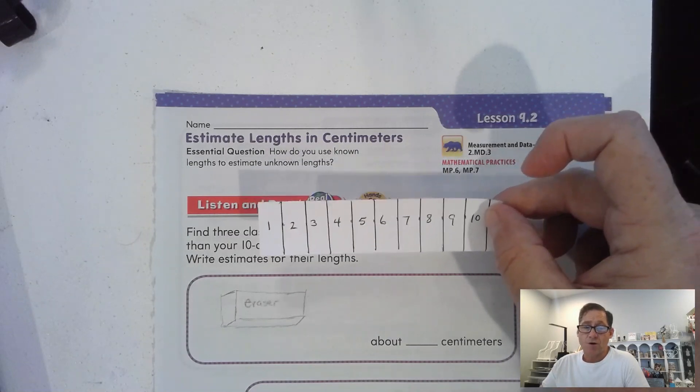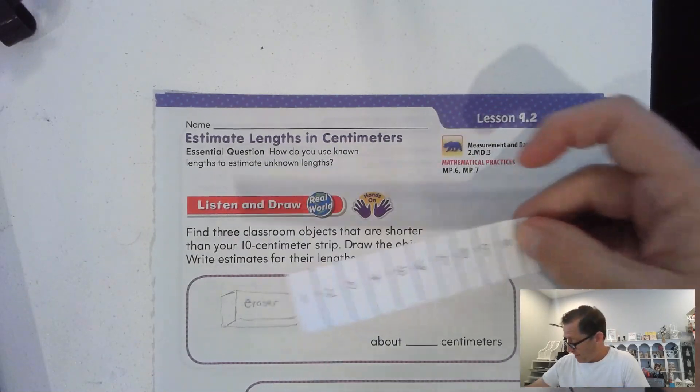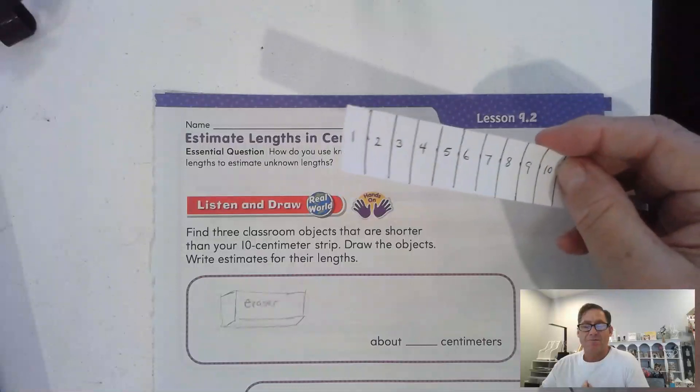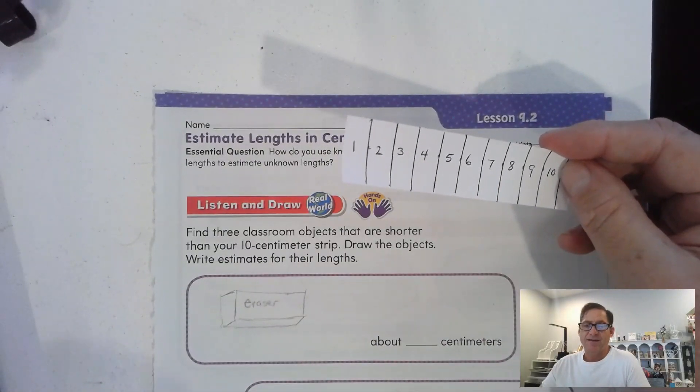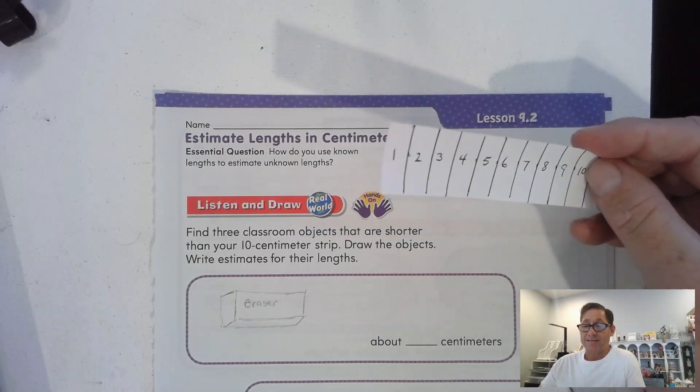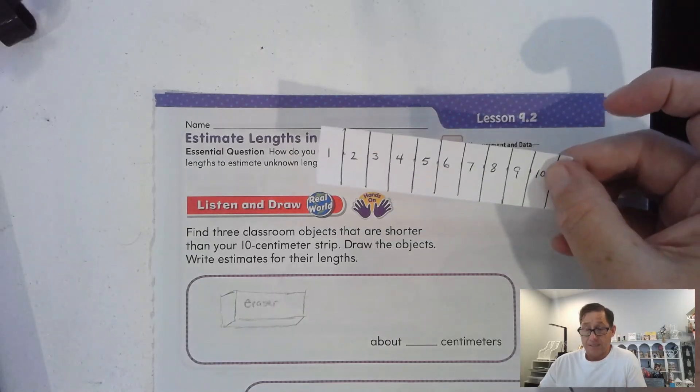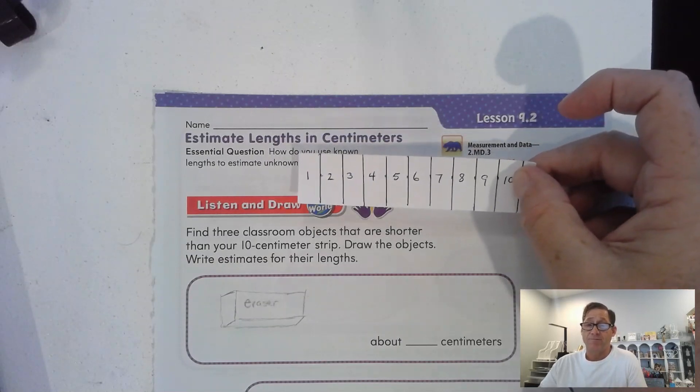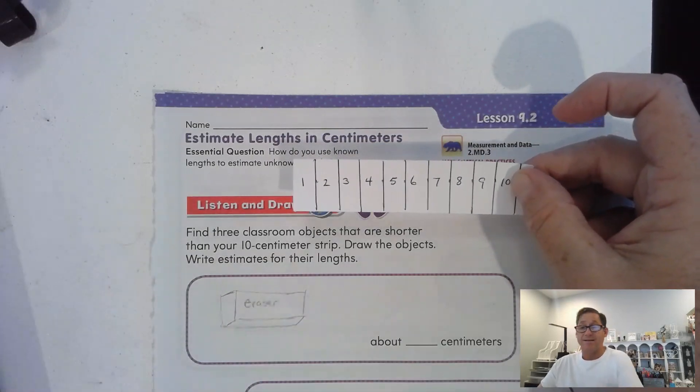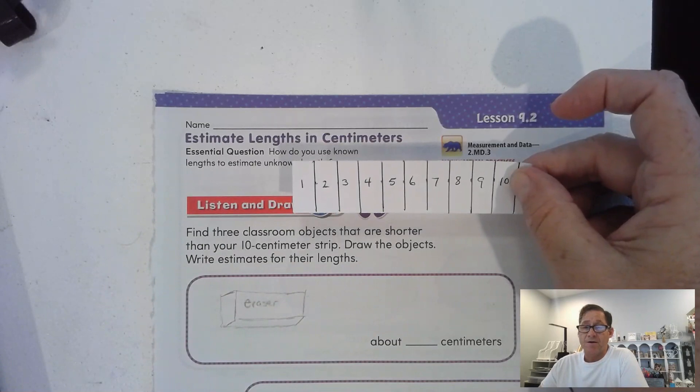And then I want you to draw those shapes on page 449, and I want you to just estimate the length of these objects. Now, for the most part, we know that they're going to be less than 10 centimeters, because that's our goal, is to find things that are small enough that they would be less than the length of your strip.